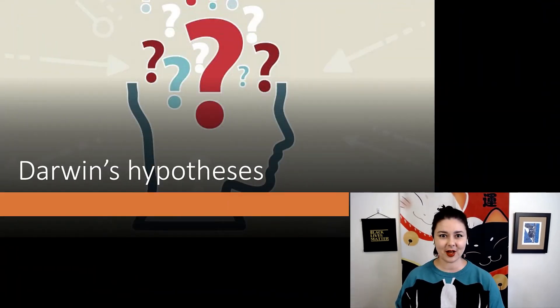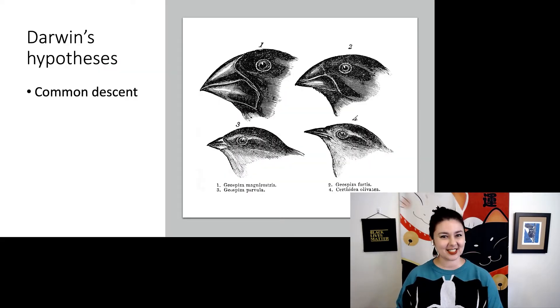Darwin proposed several hypotheses for how the diversity of life on Earth came to be. These three hypotheses are common descent, descent with modification, and last but certainly not least, natural selection. Let's talk about these one at a time.